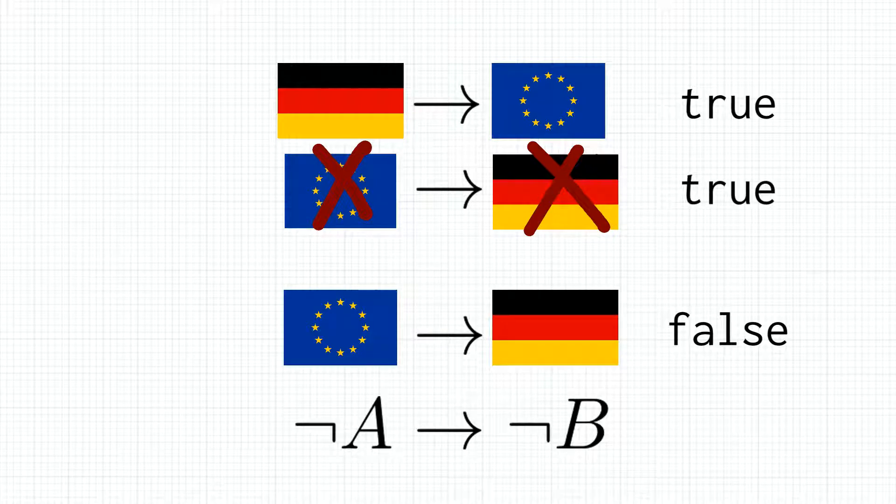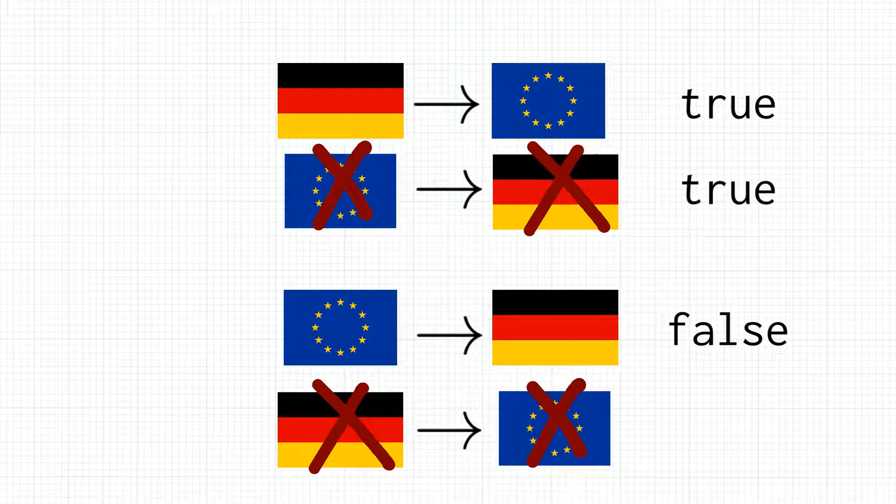And also NOT A leads to NOT B, or equivalently, if you're not German, you cannot be European, is also wrong, again because there are other countries in Europe that you could come from.